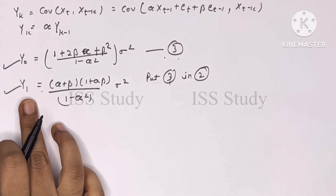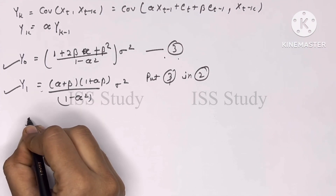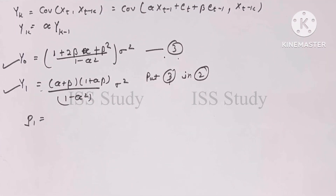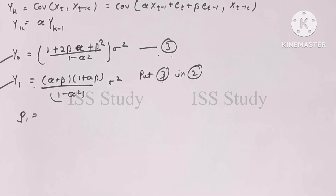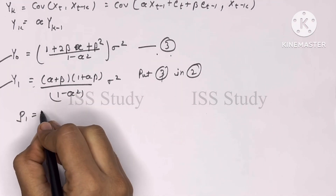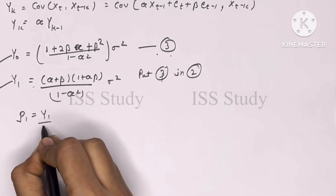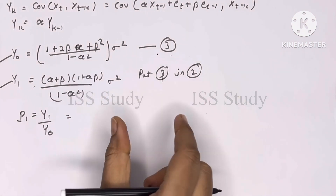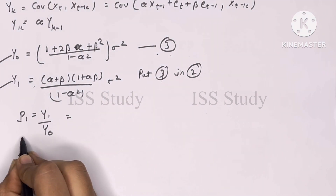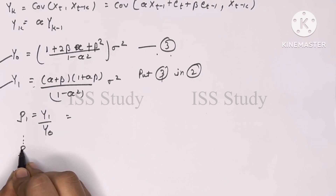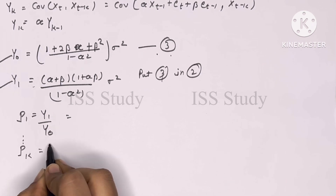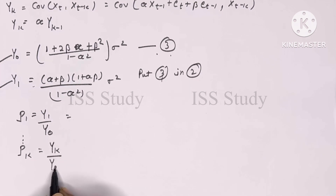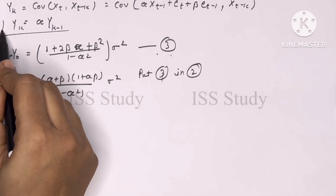Now with gamma_0 and gamma_1 known, we can find rho_1 equals gamma_1 / gamma_0. Similarly, rho_k equals gamma_k / gamma_0. You have the value of gamma_k (from the recurrence gamma_k equals alpha*gamma_{k-1}) and gamma_0, so solve for rho_2 and rho_3 by yourself.